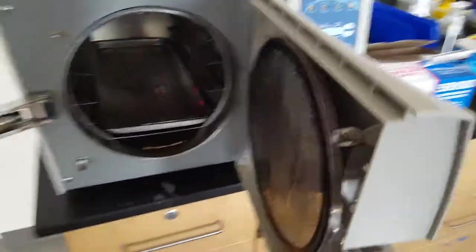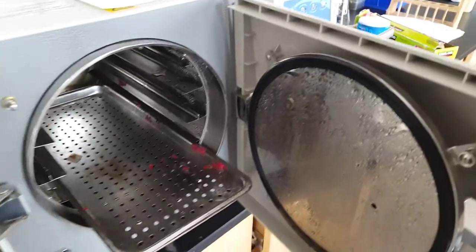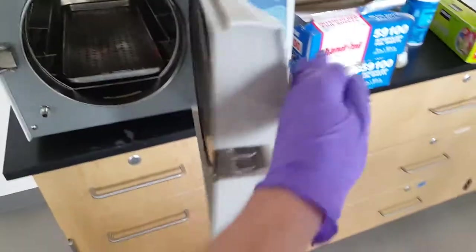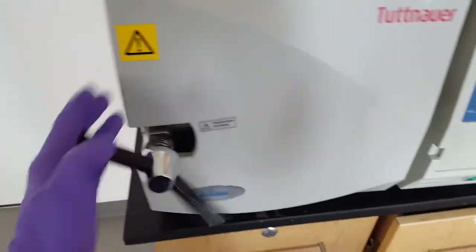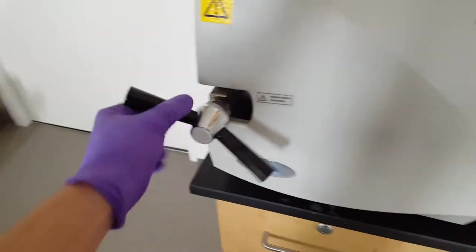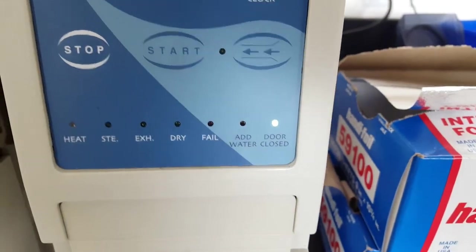And so then you put anything that you're going to autoclave. You pull this tray out, and you put anything that you're going to autoclave on the tray. And then you close it, tighten this handle, and you really want to make sure that you tighten it until the door closed light goes on.